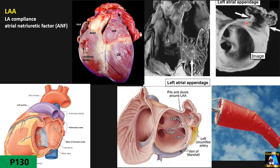The left atrium wall has different thickness at different spots, but averages four millimeters. In some spots it can be as thin as paper — especially in the auricle, where it can be as thin as one to two millimeters. One of the most important parts of the left atrium is its auricle or appendage.